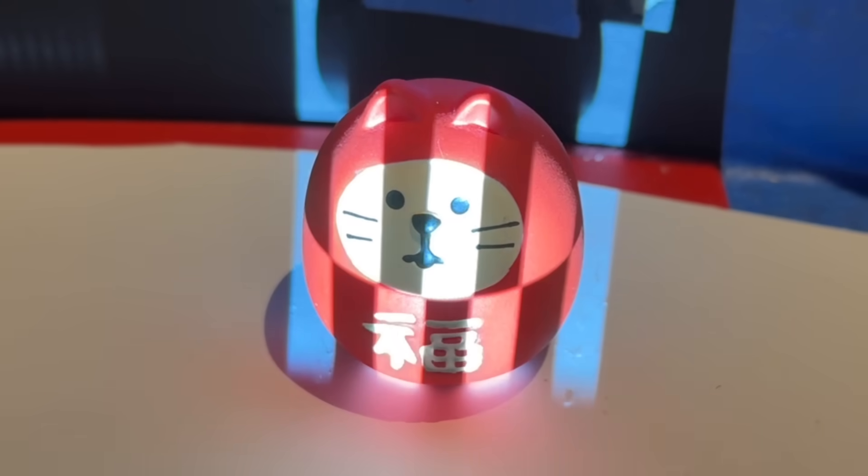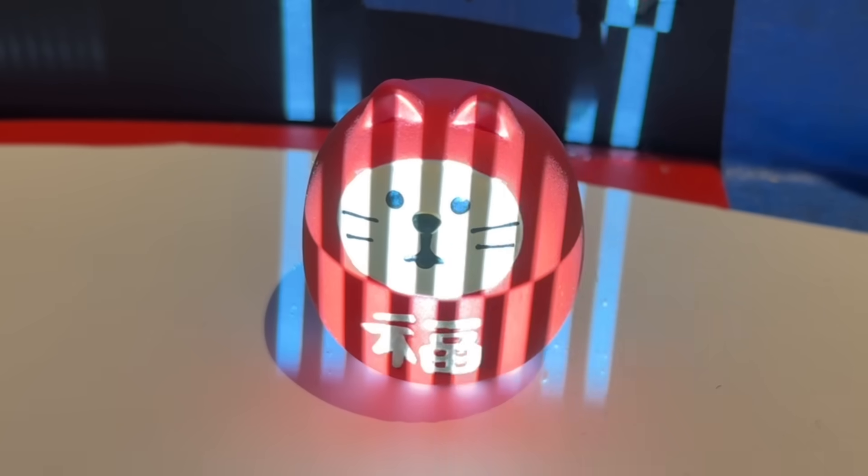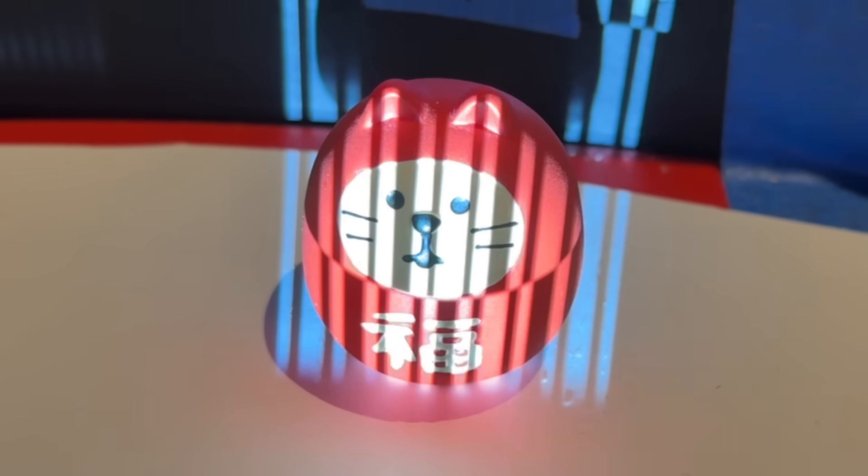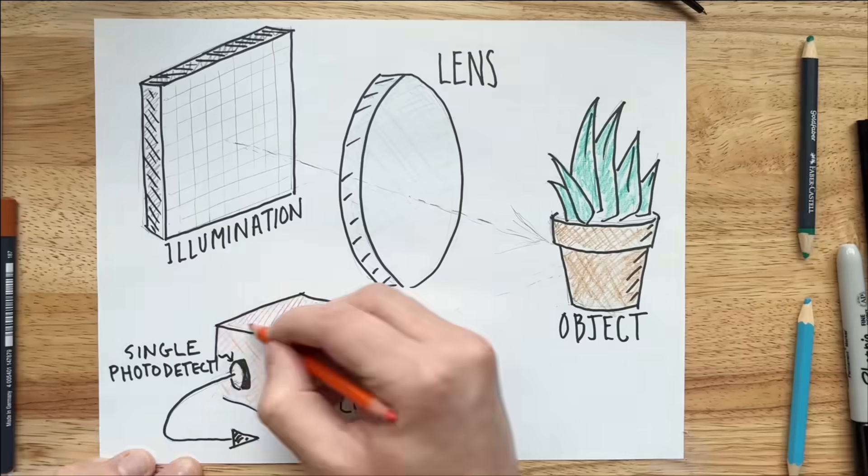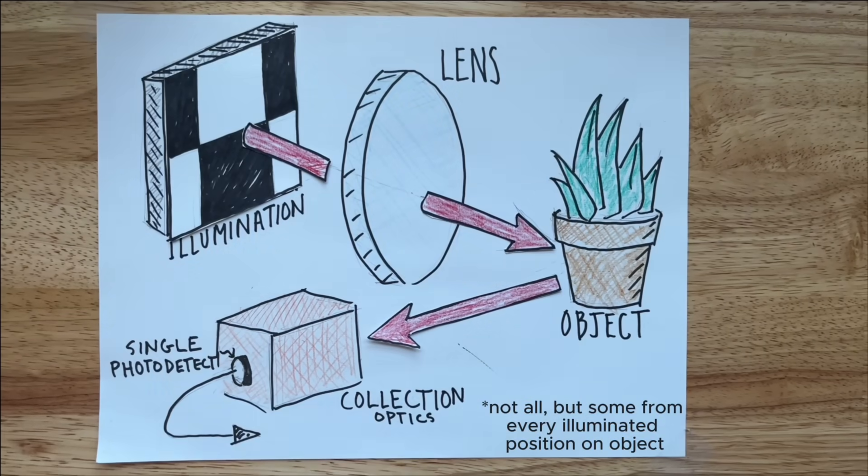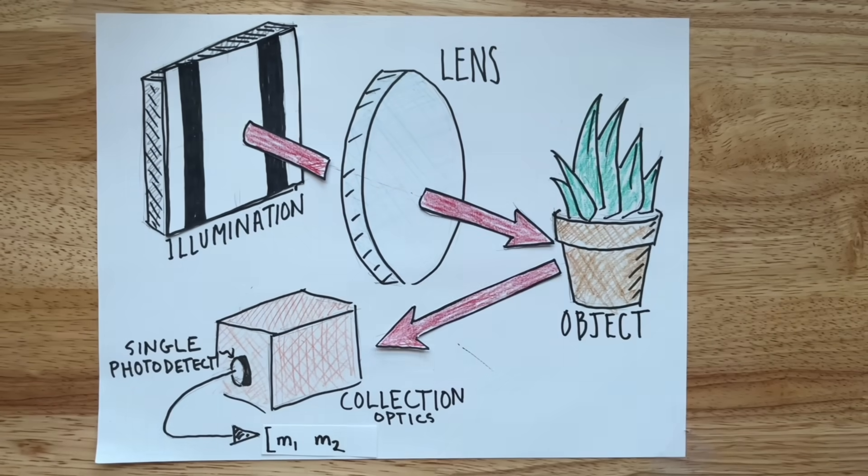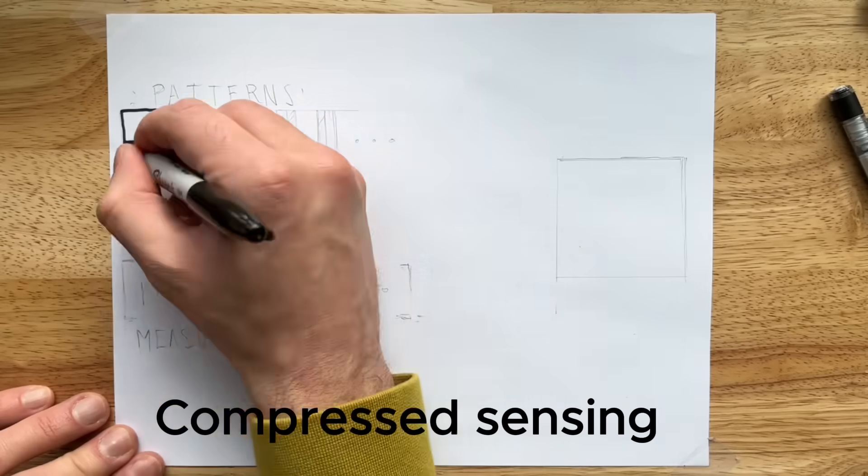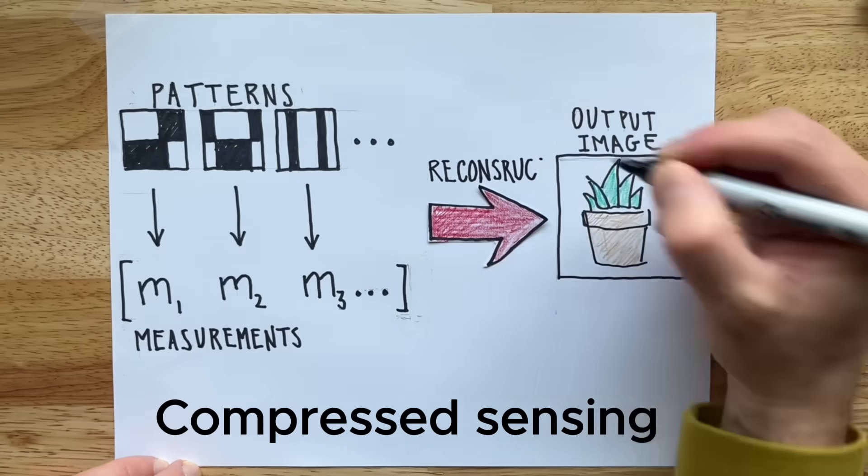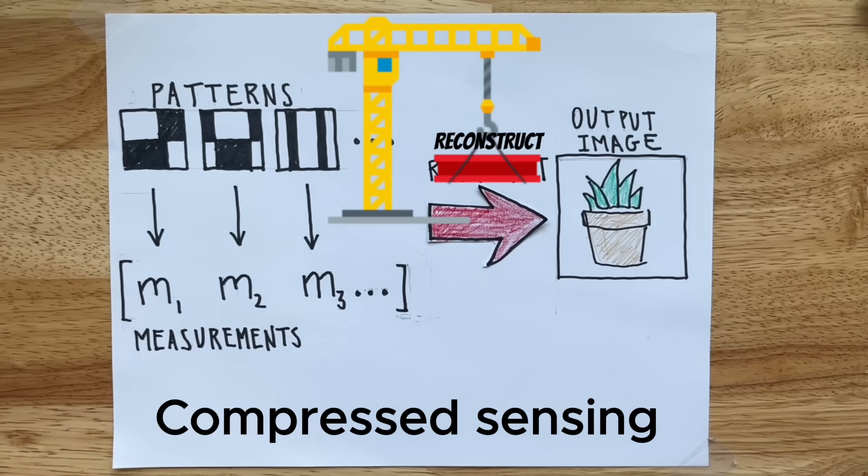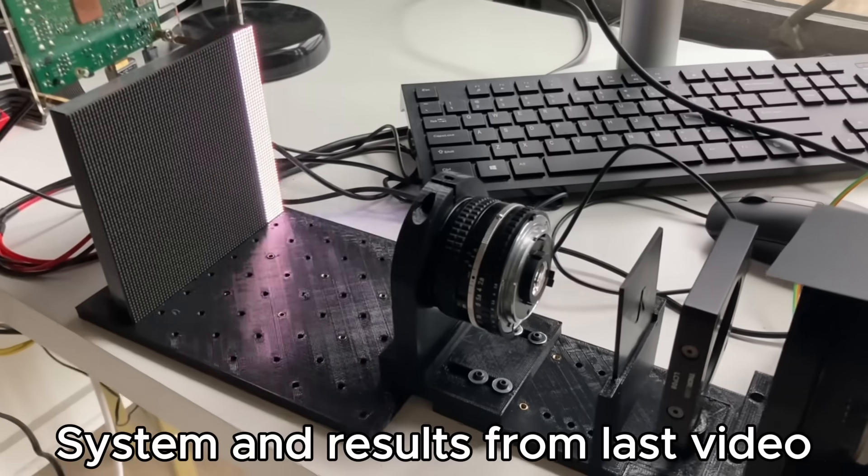But instead of point scanning, I'm going to use structured illumination patterns on the scene. It seems like this is impossible because multiple points are illuminated simultaneously and there's only a single point measurement. But if multiple patterns are used, you can actually reconstruct an image. The technique is called compressed sensing, and my last video was all about it, so I won't go over the details here.